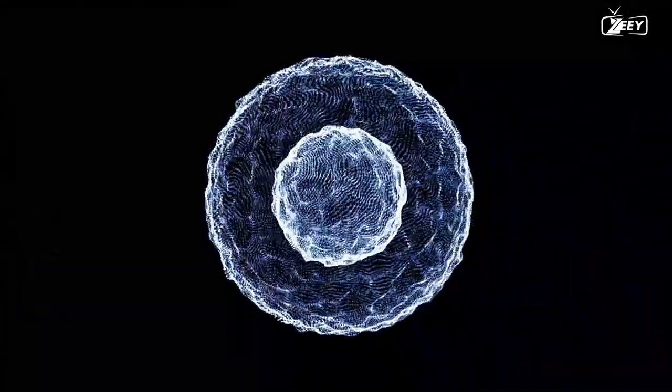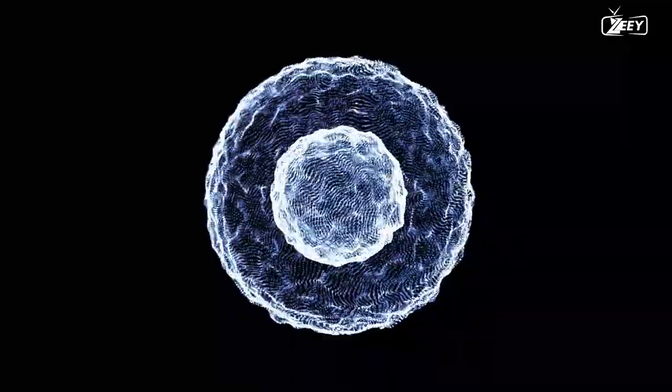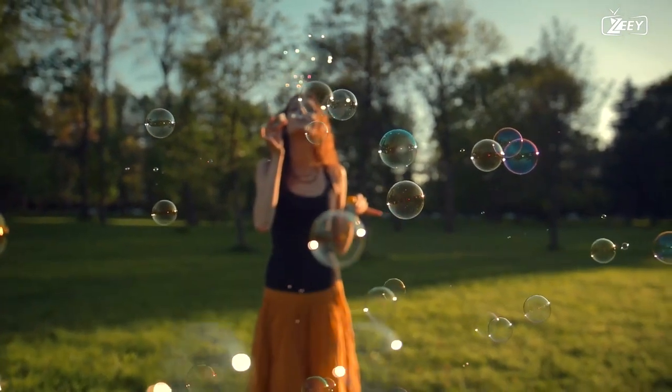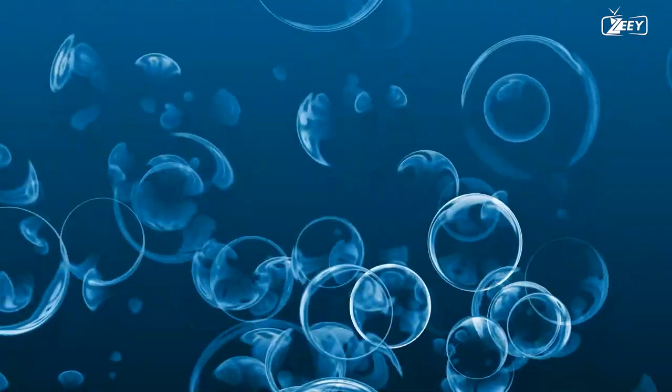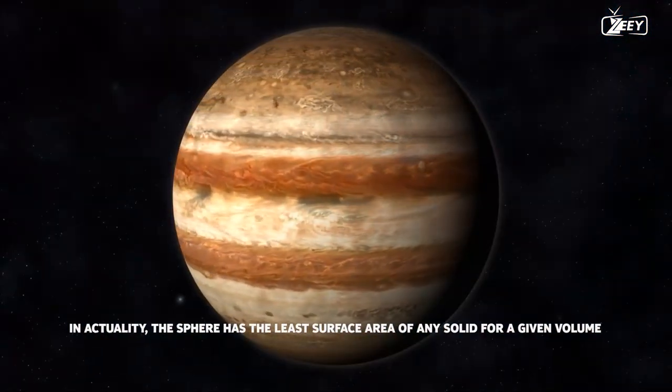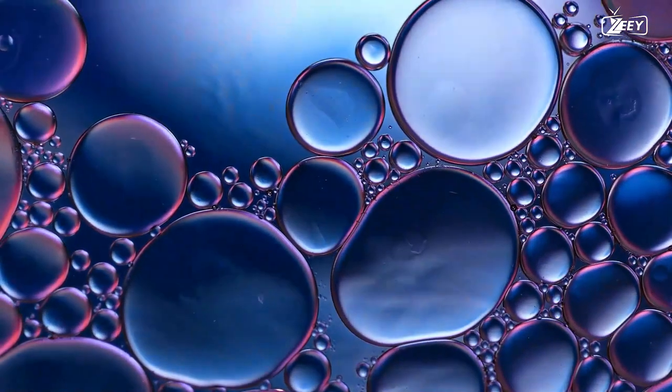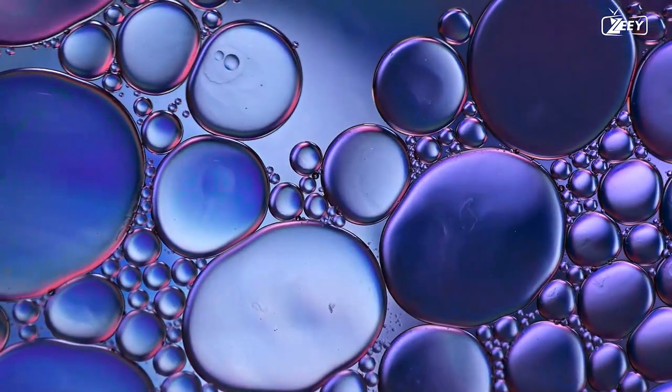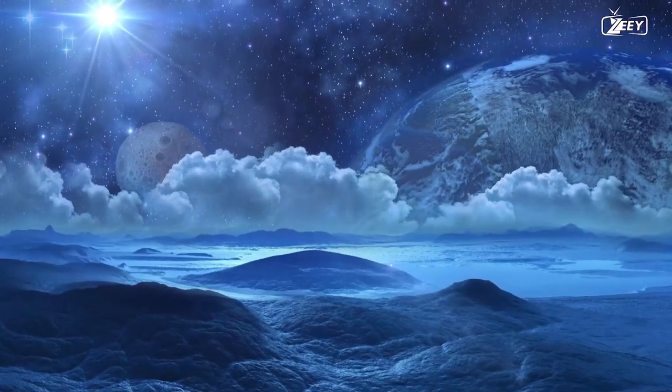The final outcome will resemble a perfect sphere more closely the larger the mass being constructed is and the lower its density. The underlying physical principle is the same as the one that causes soap bubbles to be spherical or fat bubbles and broth to be circular. Nature always opts for the shape that uses the least amount of energy. In actuality, the sphere has the least surface area of any solid for a given volume. Because of this, the soap bubble usually assumes an exact spherical shape. In actuality, it makes an effort to arrange itself into the configuration that requires the least amount of energy to maintain itself.